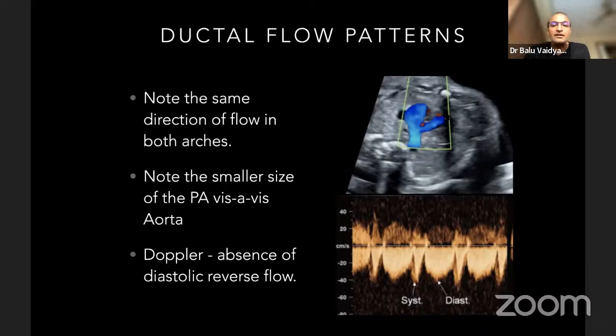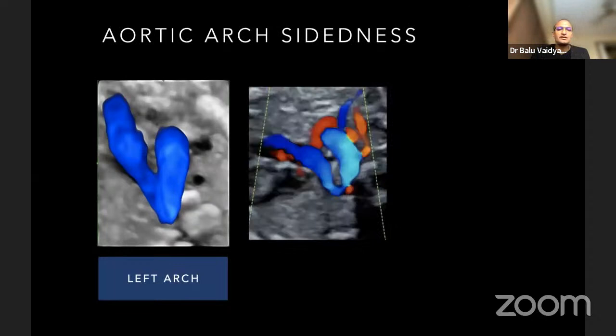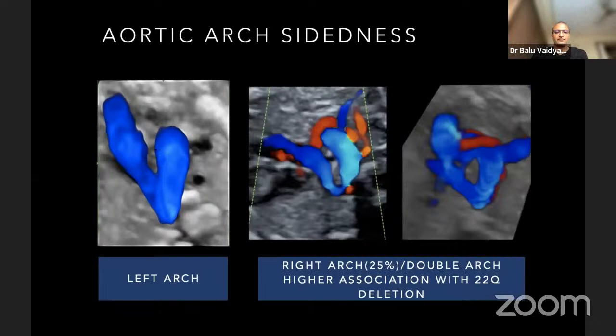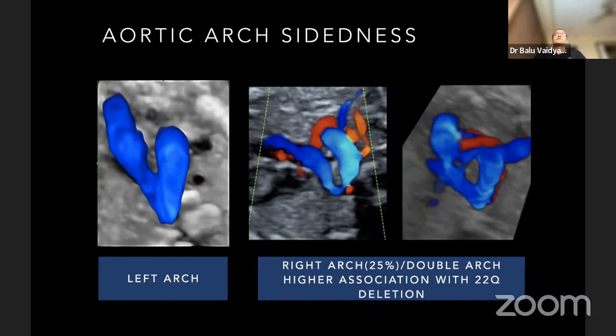Also, the aortic arch side can be seen. The first picture is a left arch, the second is a right arch, and the third is a double arch. When you have a right arch or double arch with tetralogy of Fallot, there is a higher likelihood of association with 22q deletion syndrome. A garden variety of TOF with left arch is about 15% risk, but when you have a right arch, the risk can go up to 25 to 30%. TOF with right arch can be a reason for asking for amniocentesis and testing for 22q deletion.